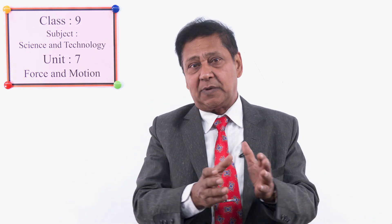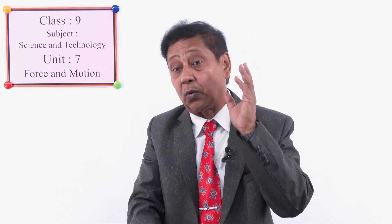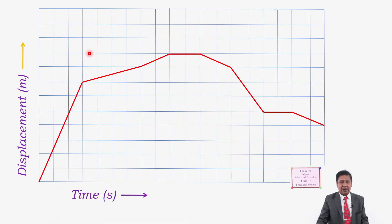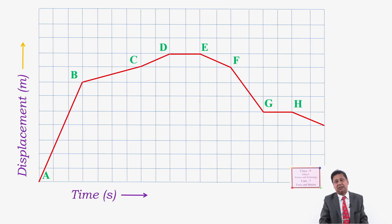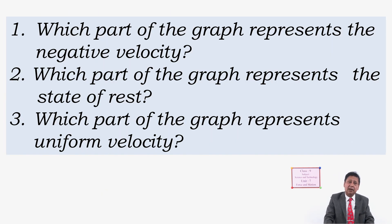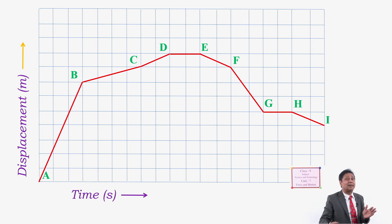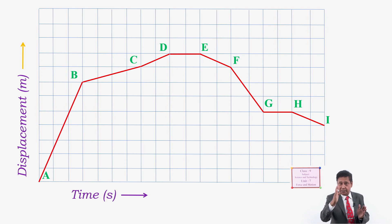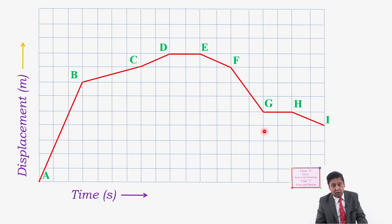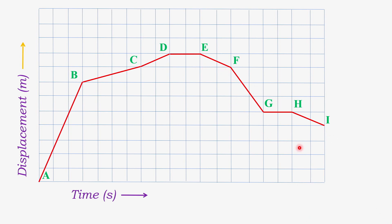Now I present a complex displacement-time graph with segments A-B, B-C, C-D, D-E, E-F, F-G, G-H, H-I, and ask questions. Which part represents negative velocity? Negative velocity means an inclined straight line tilted towards the y-axis. Looking at the graph, E-F, F-G, and H-I are all inclined towards the y-axis, so these three segments — EF, FG, and HI — represent negative velocity.